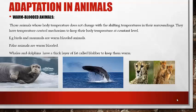Animals are categorized to adapt themselves. First, we have warm-blooded animals. Those animals whose body temperature doesn't change with the shifting temperature in their surroundings are called warm-blooded animals, because they have a temperature control mechanism to keep their body temperature at a constant level. Examples are birds and mammals. Polar animals are also warm-blooded. As you see in this picture, dolphins and whales also have a thick layer of fat called blubber to keep them warm. Similarly, seals also have a thick layer of fat and a thin coat of fur to keep them warm.